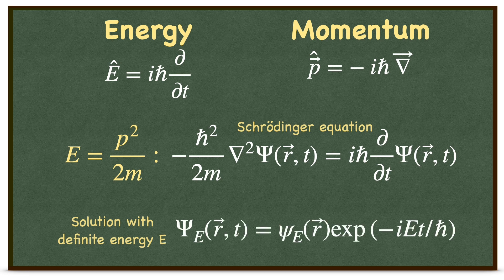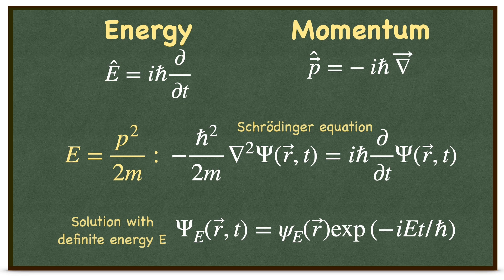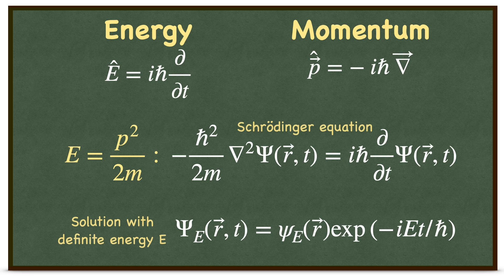This gives a time-dependent Schrodinger equation where the solution with the definite energy E is given as so. Here, psi is a function that would describe the particle of interest.